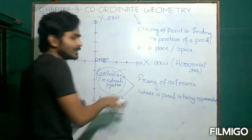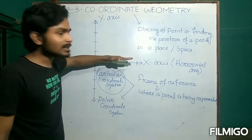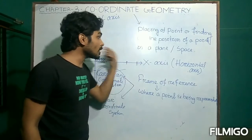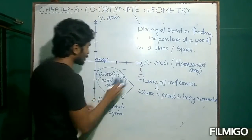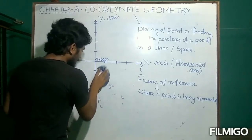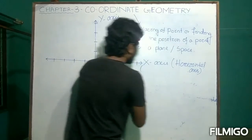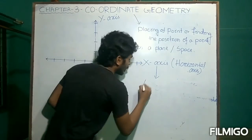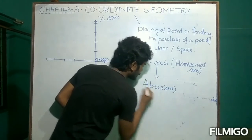Note everything I have written. The x-axis is known as the horizontal axis. The other name of the x-axis is abscissa. So, x-axis is also known as abscissa.